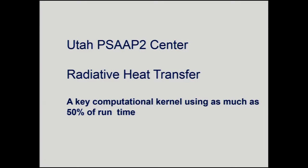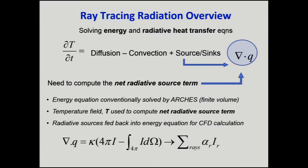Let's talk about radiation. As I showed you, it uses about half the run time. Radiation is nasty — to model it, you need every point to see every other point. So we can follow rays around using ray tracing, or solve a system of equations to get that global connectivity. We don't actually have every point see every other point quite exactly. The equation is basically an energy equation where one source term comes from radiation — we have to do a summation over the number of rays over the intensities of incoming rays. That's how radiative sources are fed back into the main CFD calculation.